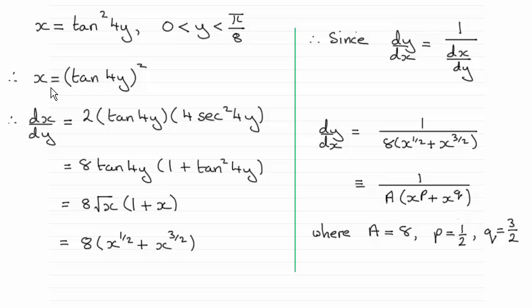So when it comes to differentiating x with respect to y, we're given tan squared 4y, which you can see I've written as tan 4y squared. And here we have to use the chain rule to differentiate this. So using the chain rule, we've got 2 times tan 4y to the power 1, and then we have to multiply it by the differential of tan 4y with respect to y.